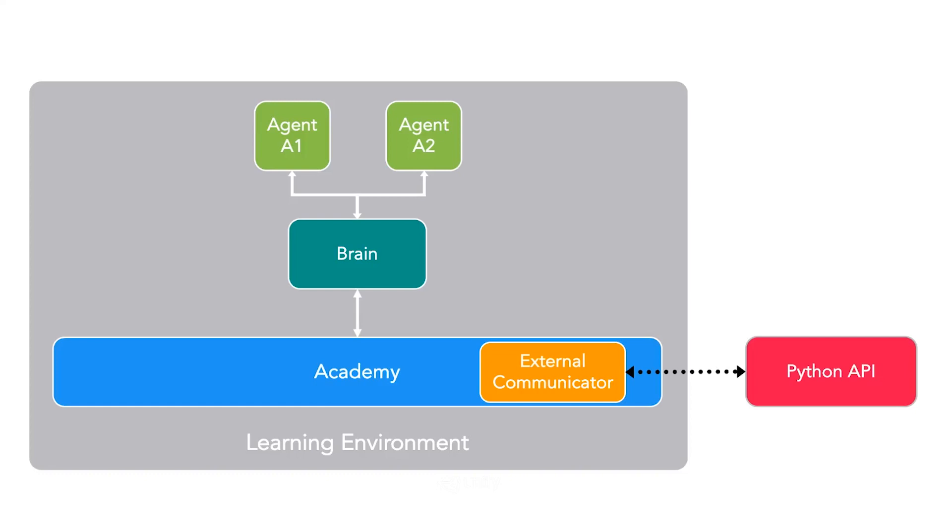In ML Agents, we introduce three new concepts: the agent, the brain, and the academy.